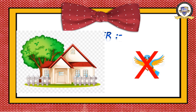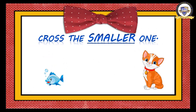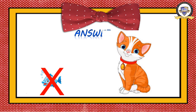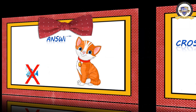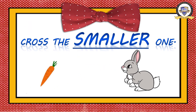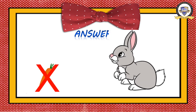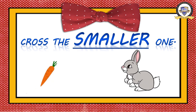Ready, next question: fish and cat — which is the smaller one? Fish! Fish is the smaller one and cat is the bigger one. Next question: carrot and rabbit — which is the smaller one? Yes, it is carrot, and rabbit is the bigger one. You have understood bigger and smaller!